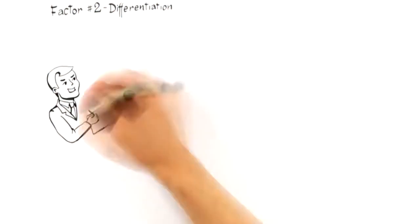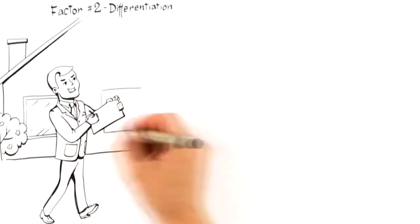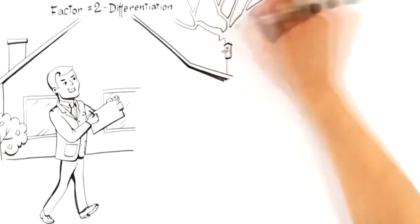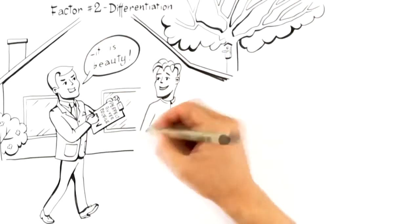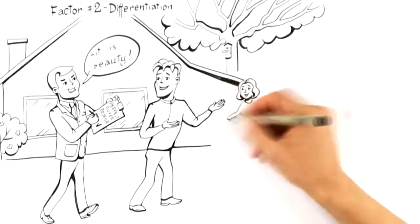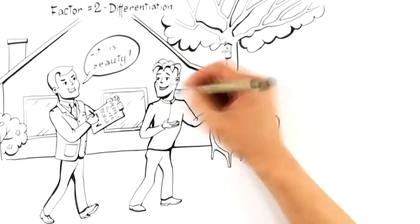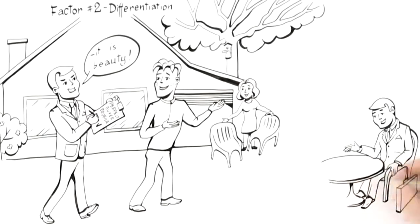This leads us to factor number two, differentiation. To attract the highest possible offer, a home must be positioned to attract buyers who will perceive its highest value. Expert advertisers understand that there is a perfect buyer profile for the buyer that would be willing to pay the most money for your home.